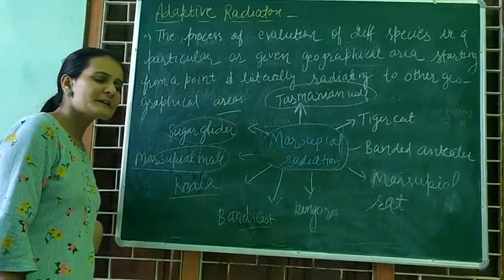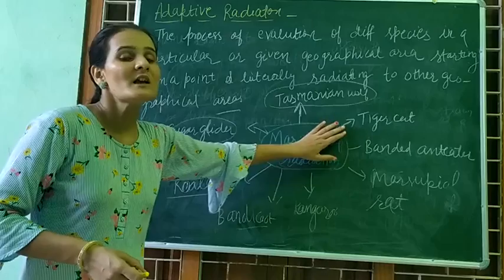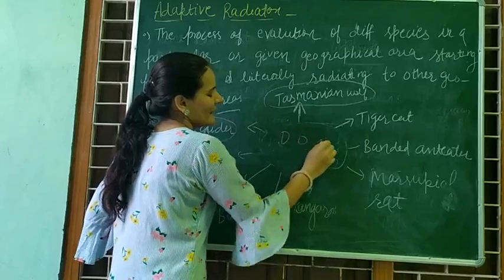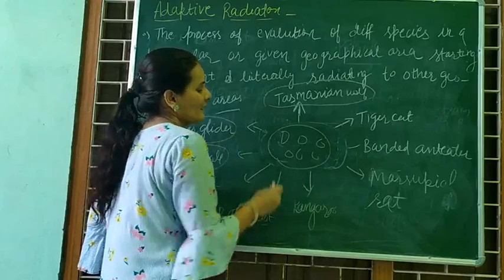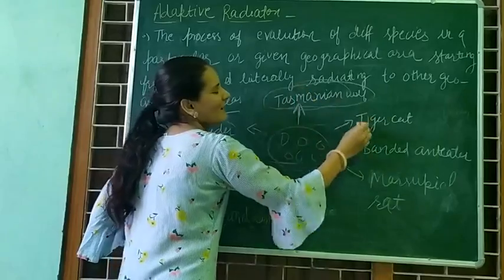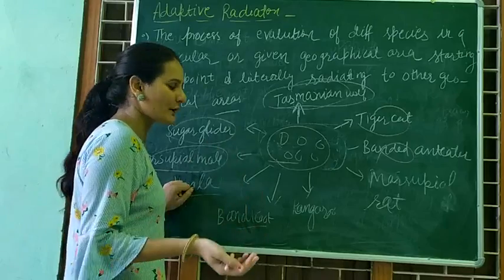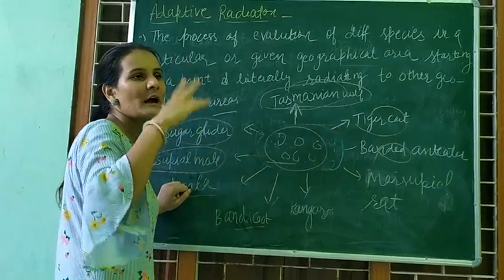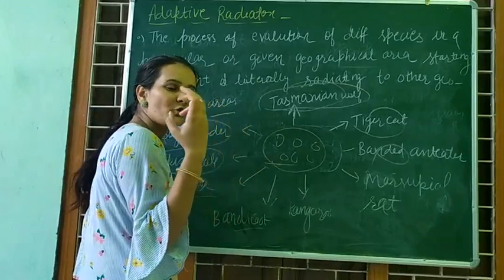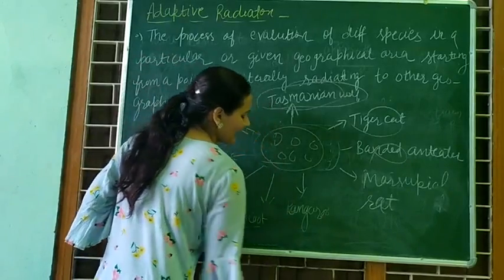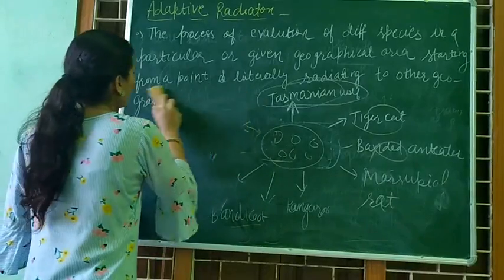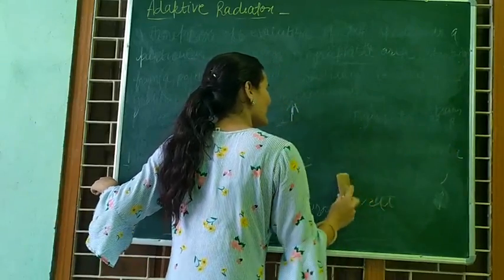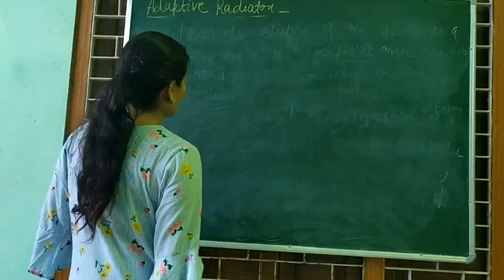This is called adaptive radiation: different species undergo evolution. It starts from one point, spreads to different areas, and other species evolve differently in different types of fields. That is the point where evolution starts in a place, leading to evolution of different species. That is adaptive radiation.